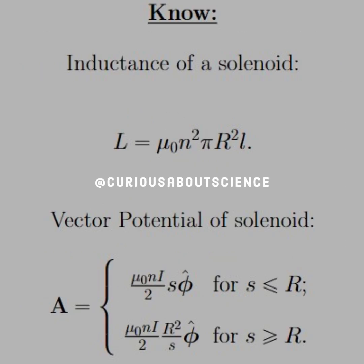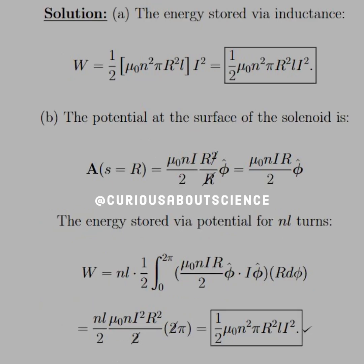Alright, that's enough. Now, what we need to know for this is the inductance of a solenoid, which is L equals mu naught N squared pi R squared L, and the vector potential of a solenoid. So you see we have different vector potentials for inside and outside, and if we apply them at S equal R, we get the same thing at the surface, so pretty nice there. Alright, let's dive on in.